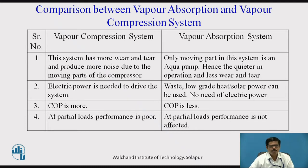So the function of compressor is carried out by three devices, namely absorber, pump, and generator. So the absorber, pump, and generator assembly carries out the function of compressor in case of vapor absorption system. And therefore, there are certain advantages in case of vapor absorption system.